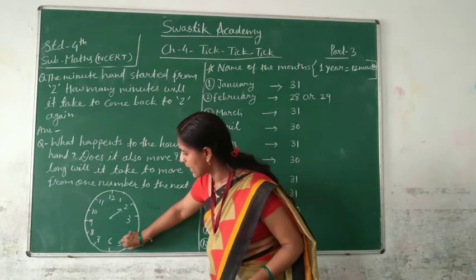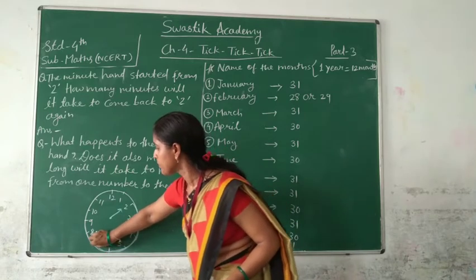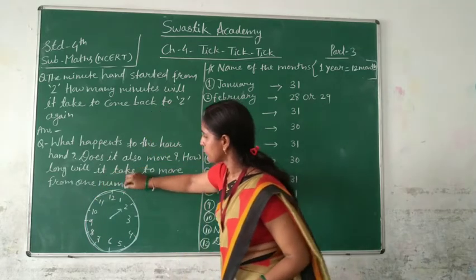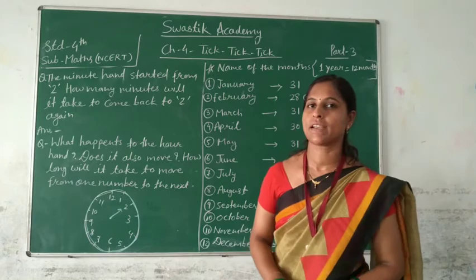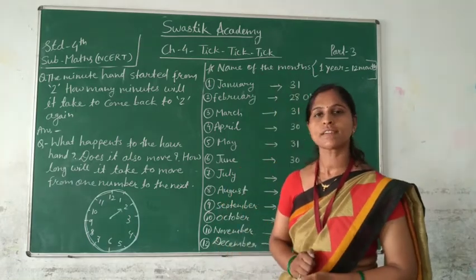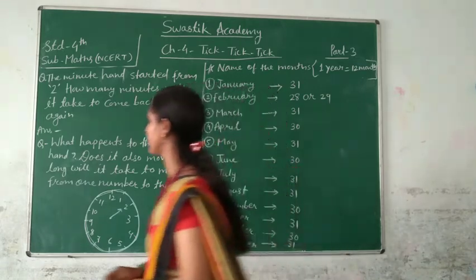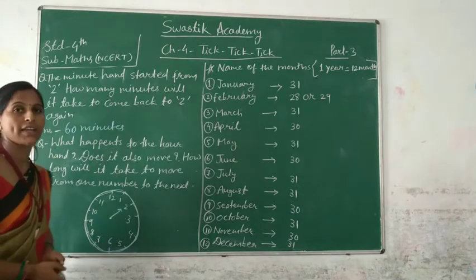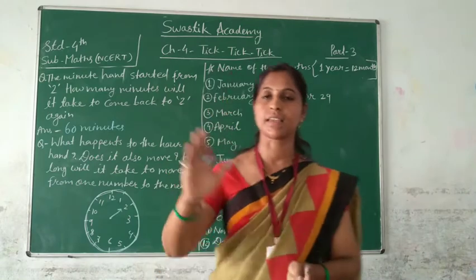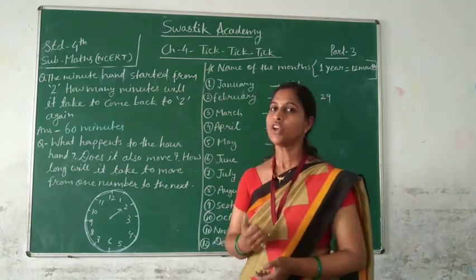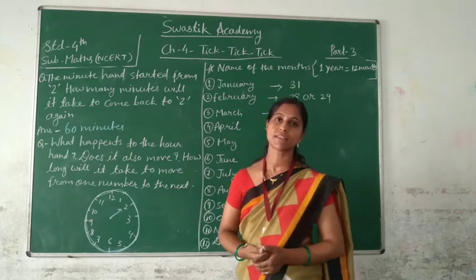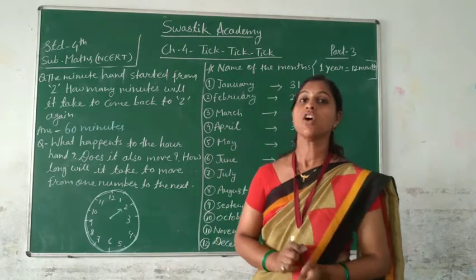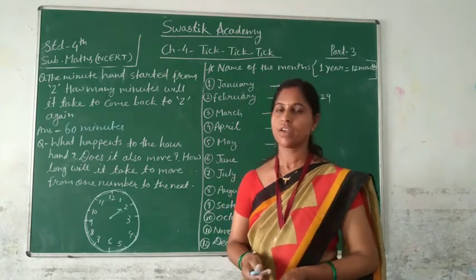So we have 5 minutes from 2 to 3, then 15, 20, 25, 30, 35, 40, 45, 50, 55, and then 60 minutes — one complete round. That is 60 minutes, and 60 minutes equals one hour.